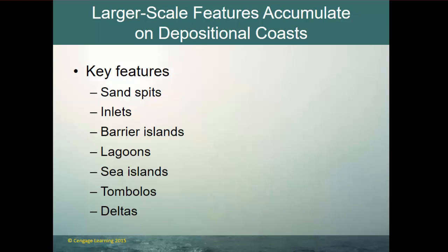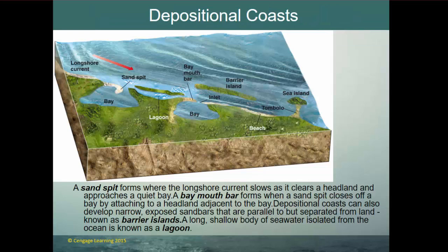Larger scale features accumulate on a depositional coastline — Florida and the southeast have sand spits, inlets, barrier islands, lagoons, sea islands, tombolos, and deltas. Sand spits form where the longshore current slows as it clears a headland and approaches a quiet bay, and sediment falls out. A bay mouth bar forms when a sand spit closes off a bay. Barrier islands are narrow exposed sandbars parallel but separated from land, and the long shallow body of seawater isolated from the ocean is known as a lagoon. A tombolo forms where sediment creates a small land bridge from the coastline out to a sea island.